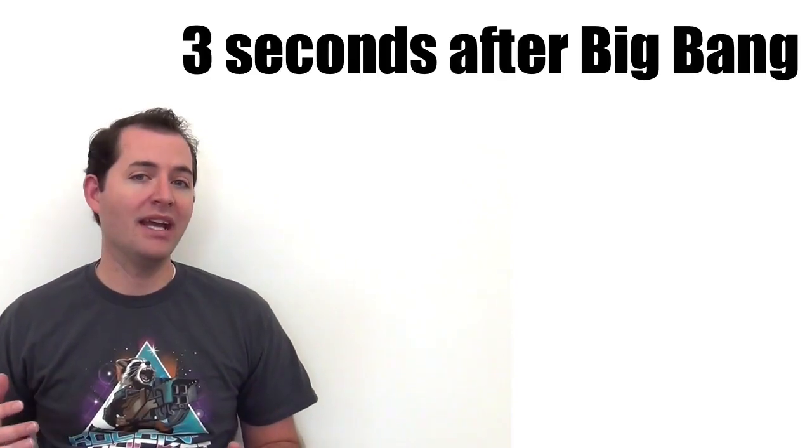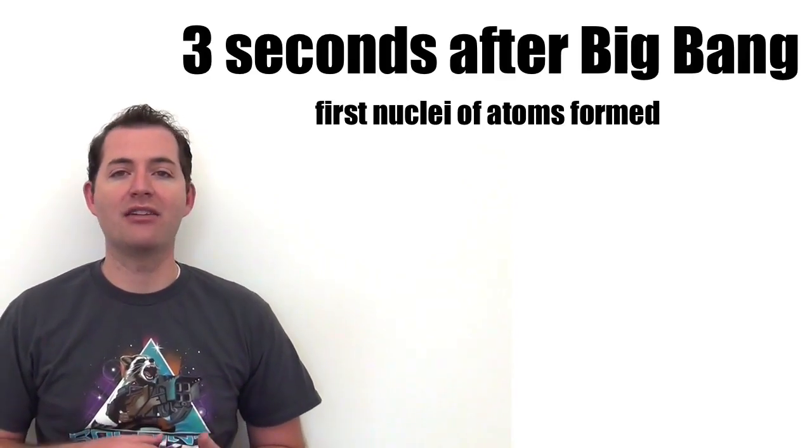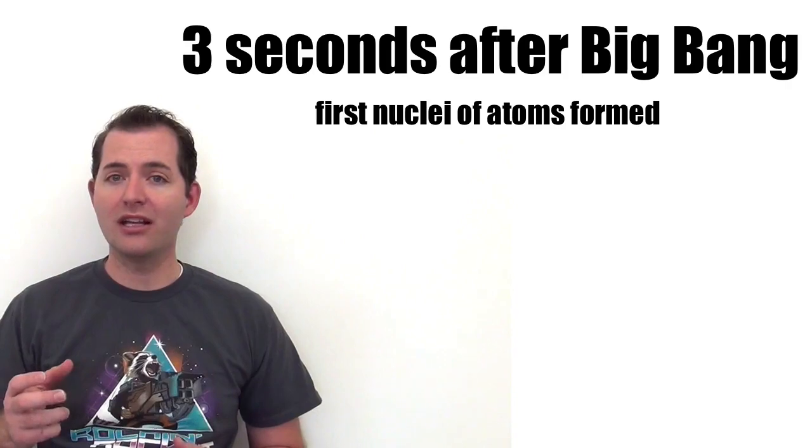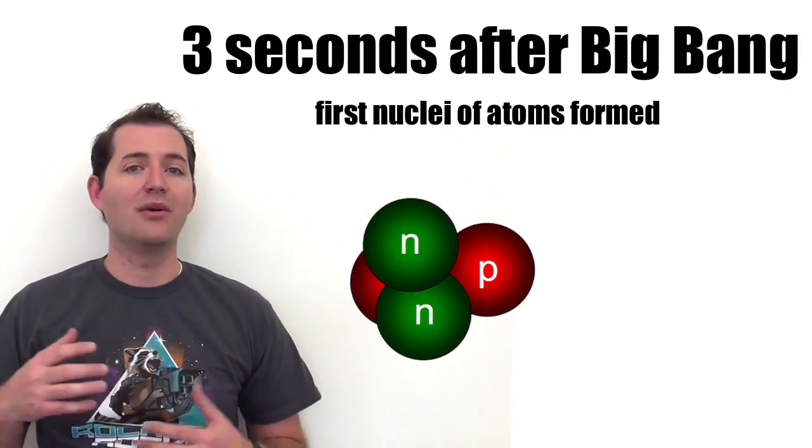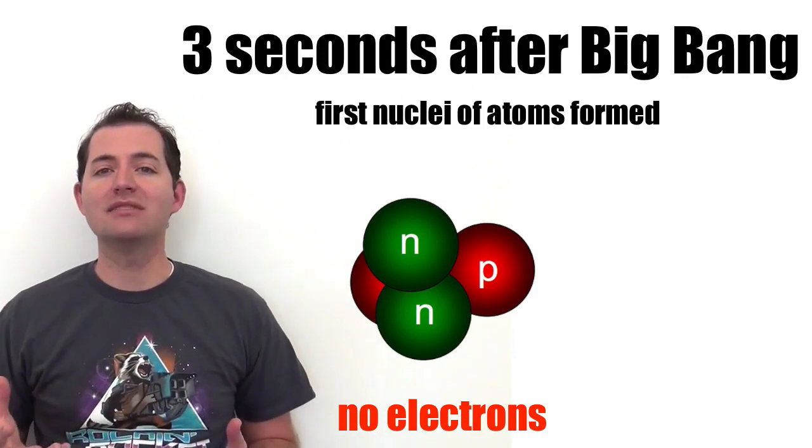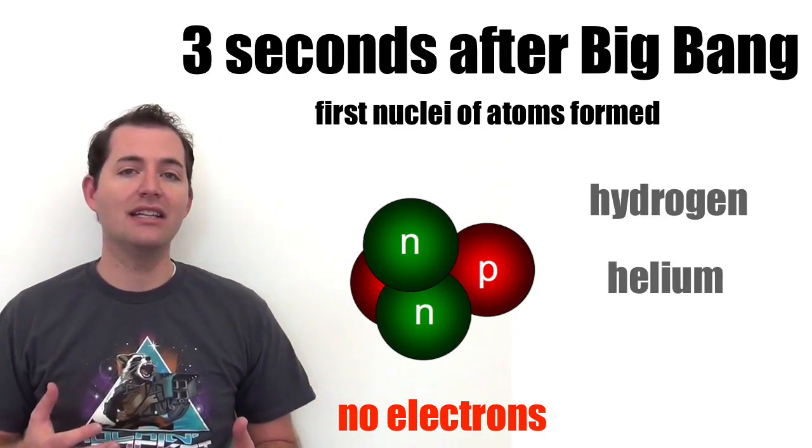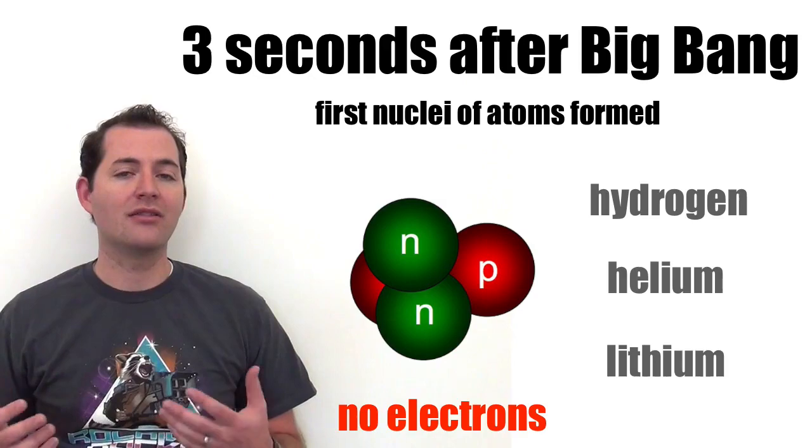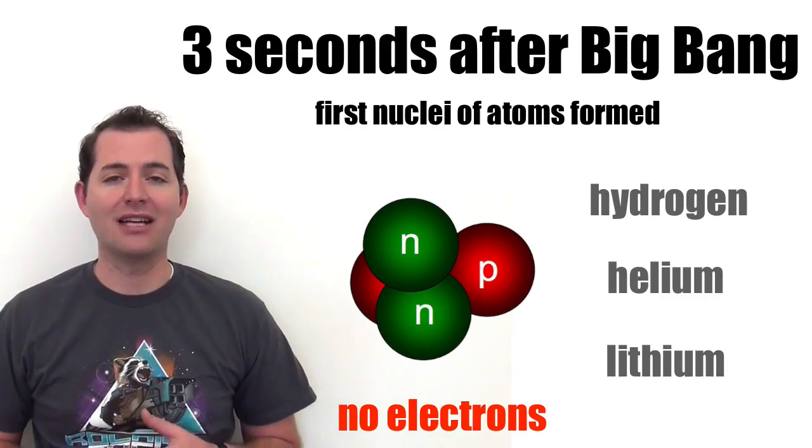Three seconds after the Big Bang, the nuclei of atoms began to form. Now these are just the nuclei or the nucleus of atoms. They weren't full atoms, they were still missing their electrons. And the major atoms that formed were hydrogen, helium, and lithium, the three smallest atoms on our periodic table today.